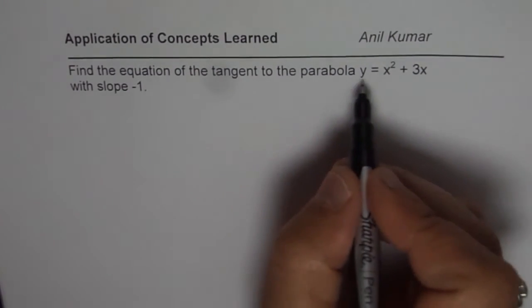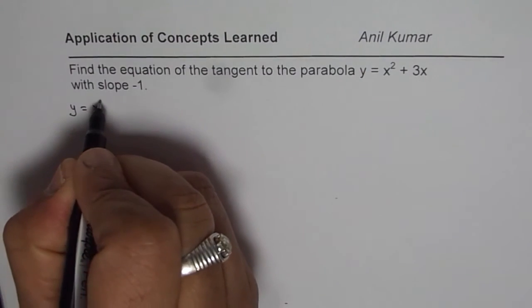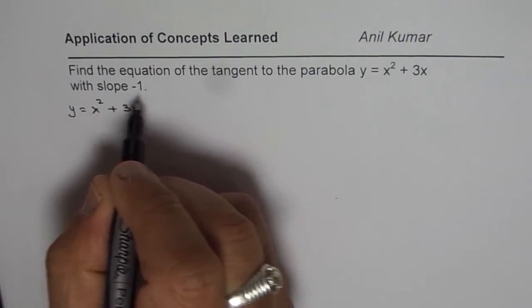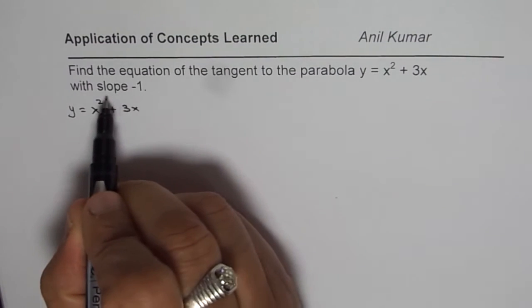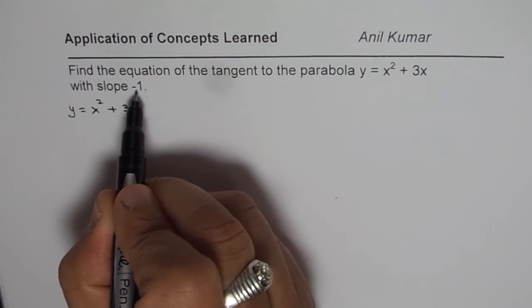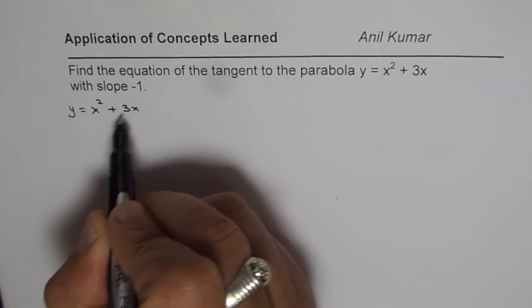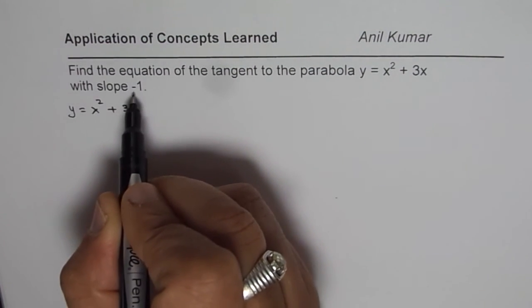So, we are given a parabola which is y equals to x square plus 3x and we are given a line which has a slope of minus 1 and we need to find the equation of a tangent line with that slope. That means it will touch the parabola at one particular point.